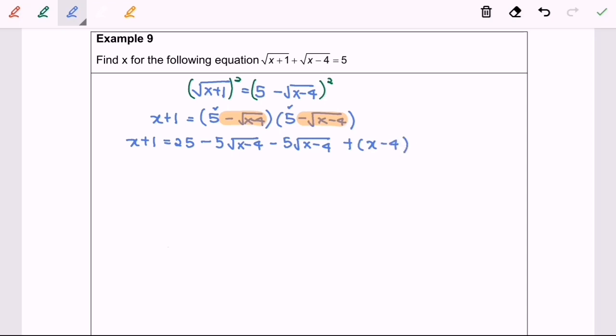Rearrange and simplify. Based on this, x plus 1 equals 25 minus 10 square root of x minus 4 plus x minus 4.